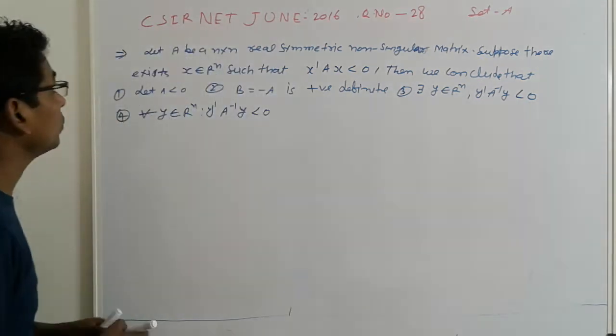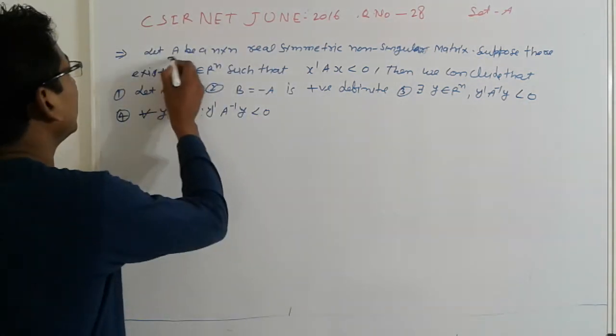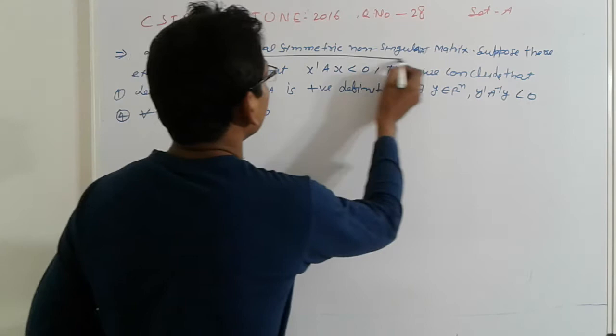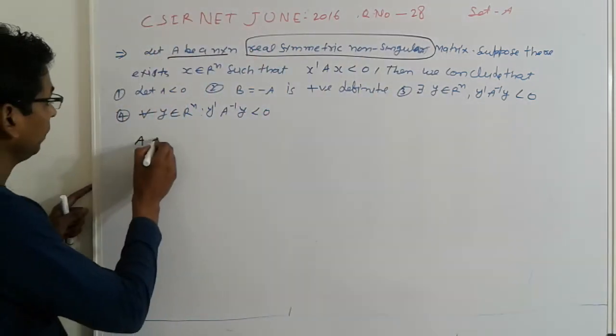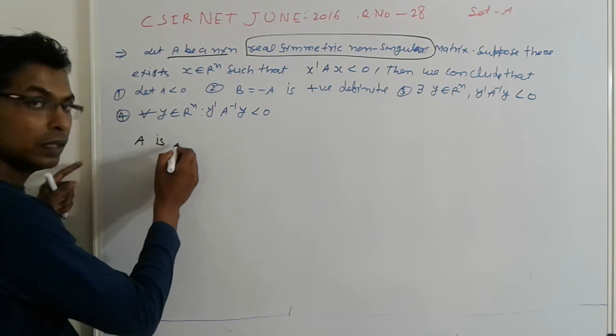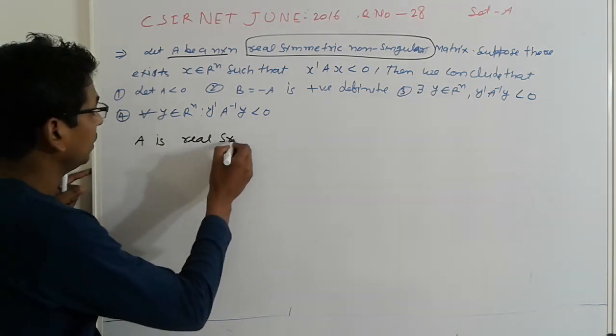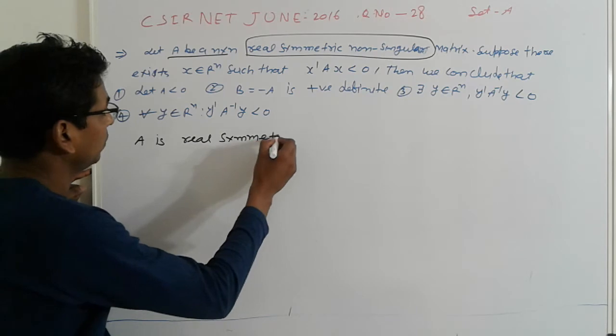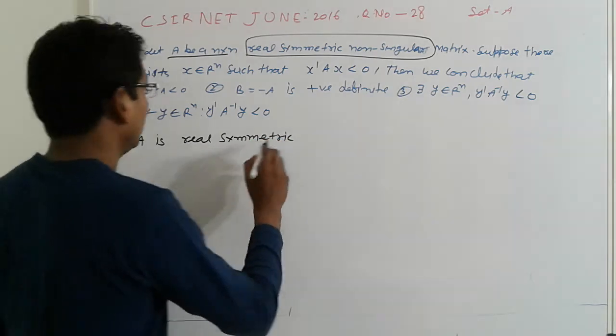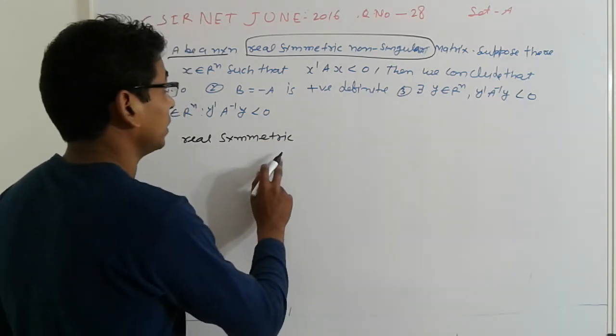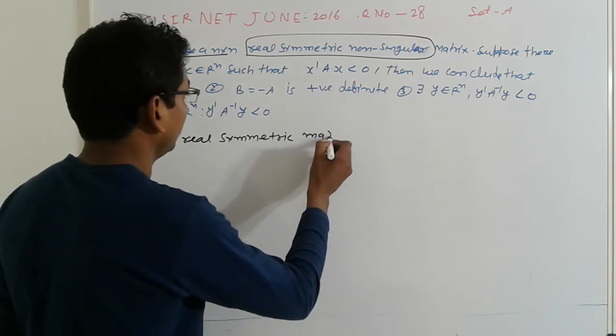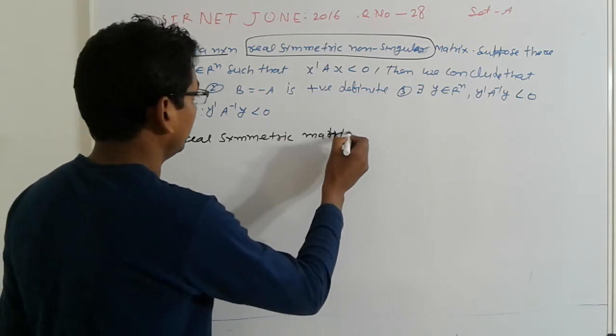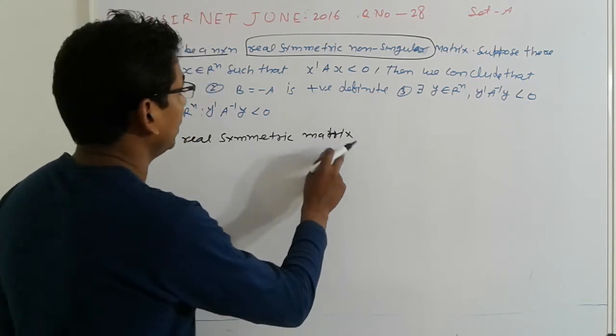So now friends, first is what is given here. A is the n cross n real symmetric non-singular matrices. It means if A is real symmetric matrix.